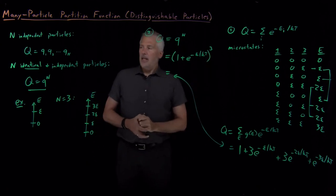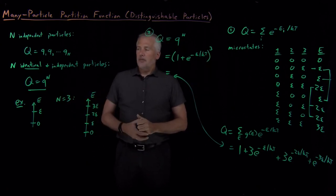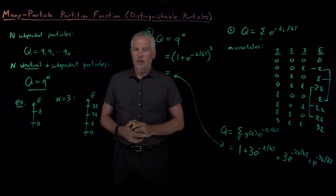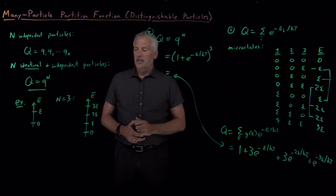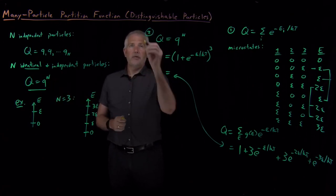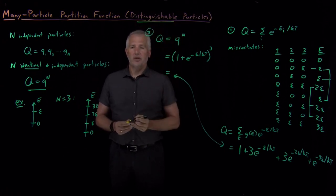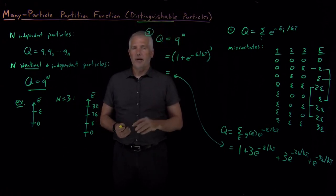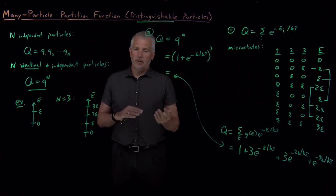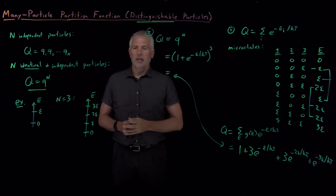This tells us how to calculate a partition function when we have a bunch of independent particles, but I've glossed over one important detail: we need to pay attention to whether those molecules can, in fact, be distinguished from one another. Everything done here is fine for distinguishable particles. I'll make clear what distinguishable particles means, and address the opposite case of indistinguishable particles, in the next video lecture.